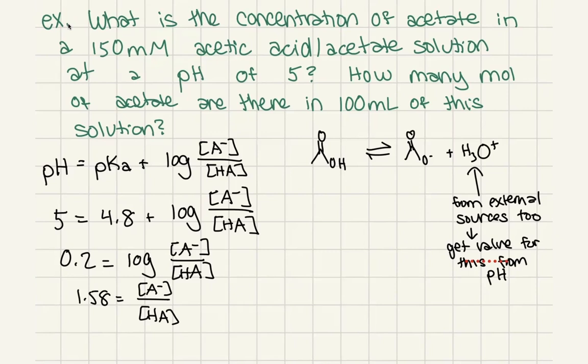If we're at a higher pH, there's fewer protons around. So we would expect that we would have more of the base form. And so this makes sense that we're getting a value that is slightly higher, saying there's slightly more of the base than the acid, but not dramatically. So this seems like a reasonable thing.